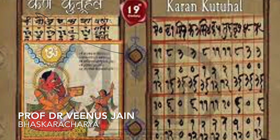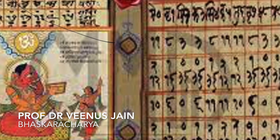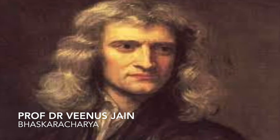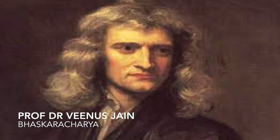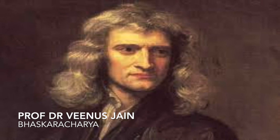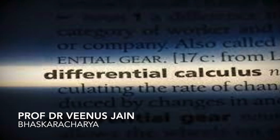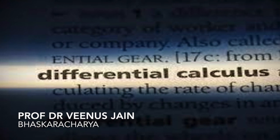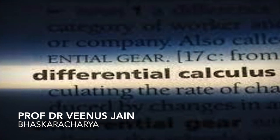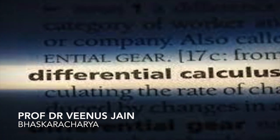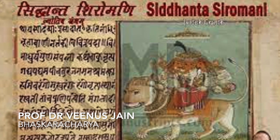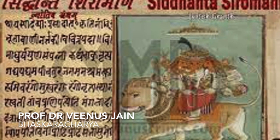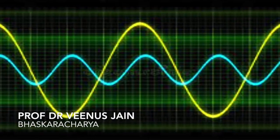He also wrote another treatise named Karan Kautuhal. Bhaskar's work on calculus predates Newton and Leibniz by over half a millennium. He is particularly known for the discovery of the principles of differential calculus and its application to astronomical problems and computations. The Siddhant Shiromani demonstrates Bhaskar's knowledge of trigonometry, including the sine table and relationships between different trigonometric functions.